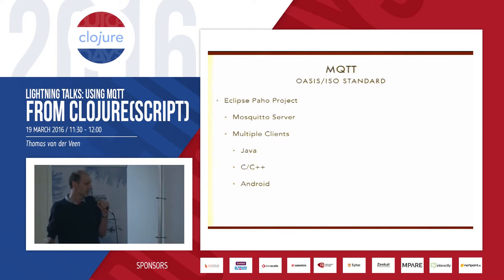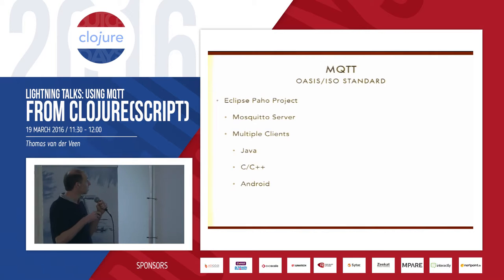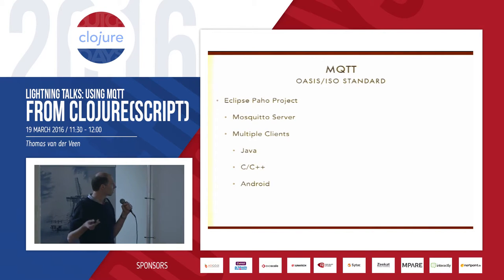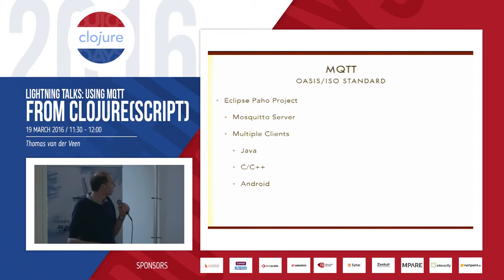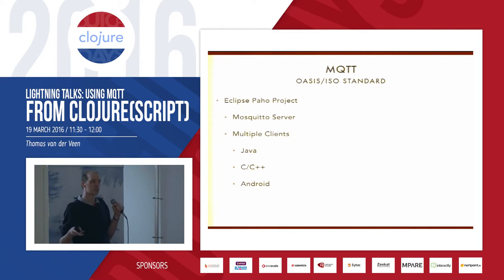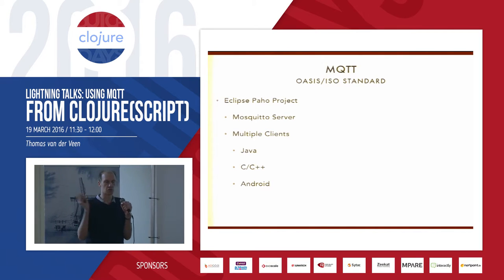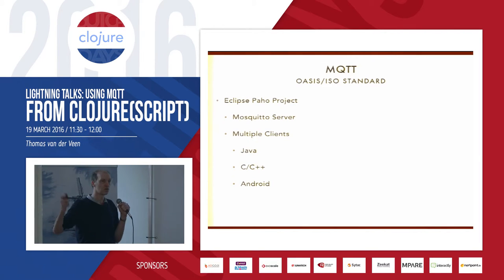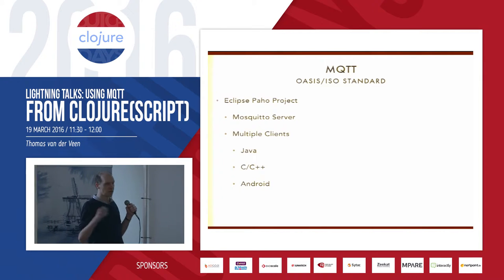MQTT is an open standard, verified by the OASIS standard group and also an ISO standard. There are lots of open source projects around it. The Eclipse PAHO project is one which is quite active. They have a Mosquitto server implemented in C that runs on lots of different platforms, from your Raspberry Pi to a big machine. Multiple clients are available: Java, C, C++, Android, Arduino.